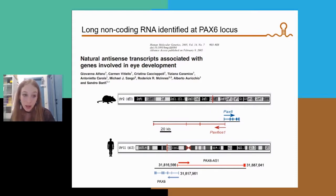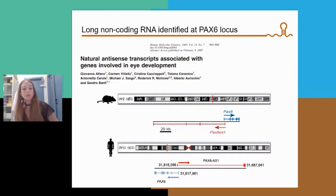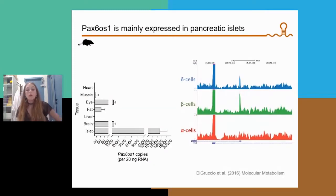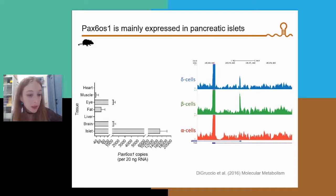This long non-coding RNA was first described by Alfano et al. in the eye and is annotated as Pax6-OS1 in the mouse and PAX6-OS1 in humans. We looked at the tissue distribution of this lncRNA and found that it is expressed in the same tissues where Pax-6 is mainly expressed — the eye, the brain, and pancreatic cells.